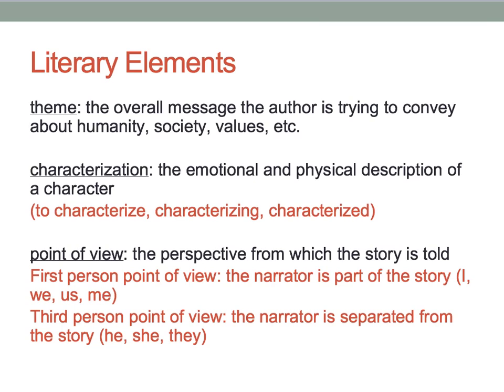Is the author talking about racism? Is he talking about giving people a chance? Various themes exist in literature, but what is the author trying to say to you? Next is characterization. I can't tell you how many times I see a student write, 'Walter Lee is an immature, money-hungry guy who makes bad decisions.' You have just given me his emotional and physical description. You could use the words 'characterize' or 'characterizing' or 'characterized' instead of saying 'Walter Lee is.' That's an example of characterization.